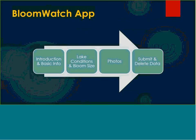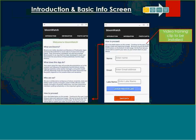The BloomWatch app for the smartphone has four different screens: an introduction with basic info, lake conditions, a photo screen, and a data submission screen. The first screen shows an introduction to BloomWatch, stating what blooms are, what the app does, who we are that are collecting the data, and how to proceed with the app itself. This was piloted last year and is going through some tweaks — hopefully by this summer we'll have it all up and ready. We hope to install a video training clip, since sometimes people prefer to look at a clip rather than read through a lot of text.